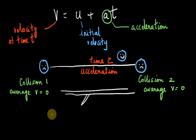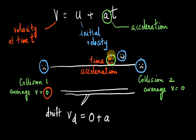So if I represent my drift velocity using this v is equal to u plus at relation, the drift will be the initial velocity, which is the velocity during collision 1 equals to zero, plus acceleration into the time taken between the two collisions, which is tau. So my vd is equal to a times tau.